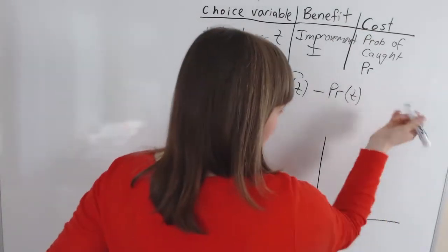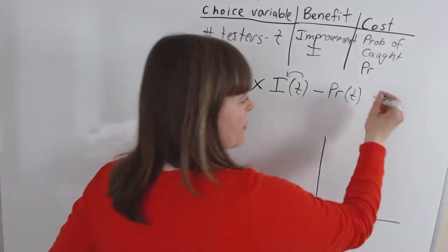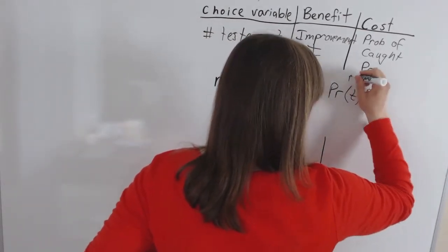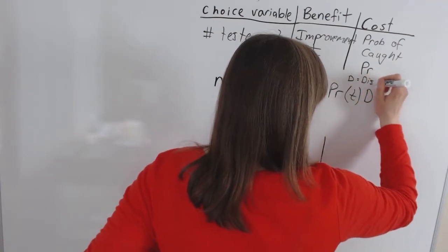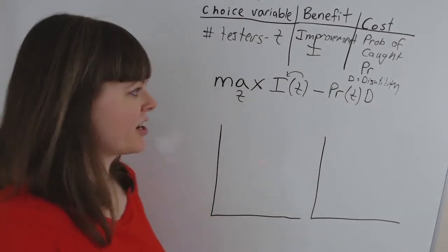And of course anytime you have a probability you need to multiply it by the utility or disutility if that probability happens. So here I'm just going to have D equals disutility if caught. Disutility from Umbridge's punishment.